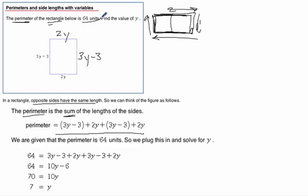We are given that the perimeter is 64 units, so we set it equal to 64. That's kind of a long equation, but it's not that hard because we have so many like terms. The first step is to combine like terms.